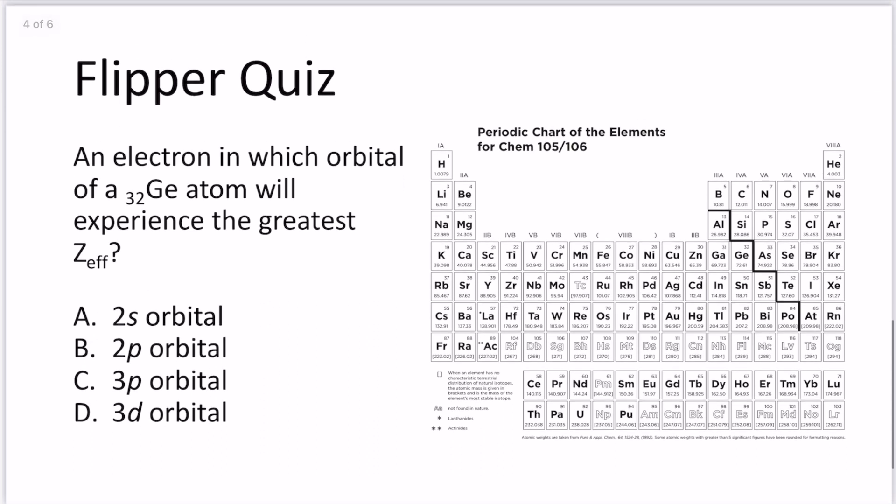Okay, next one. Here we have germanium, Ge. It's number 32 on the periodic table, located over here, and it's asking, an electron in which orbital of a germanium atom will experience the greatest Z-effective. So it's given us four choices here: 2s, 2p, 3p, and 3d.